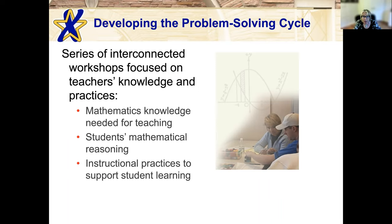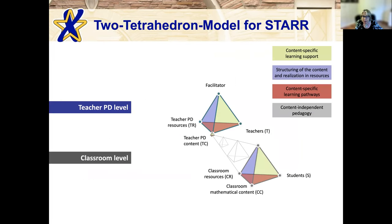In this first phase we were developing the Problem Solving Cycle model — a series of interconnected workshops focused on teachers' knowledge and practices. The three primary aspects were: mathematical knowledge needed for teaching, which is knowledge of mathematics unique to the teaching profession; knowledge of students' mathematical reasoning; and knowledge of instructional practices to support students. This phase dealt with two levels of the tetrahedra model: the classroom level and the teacher professional development level.